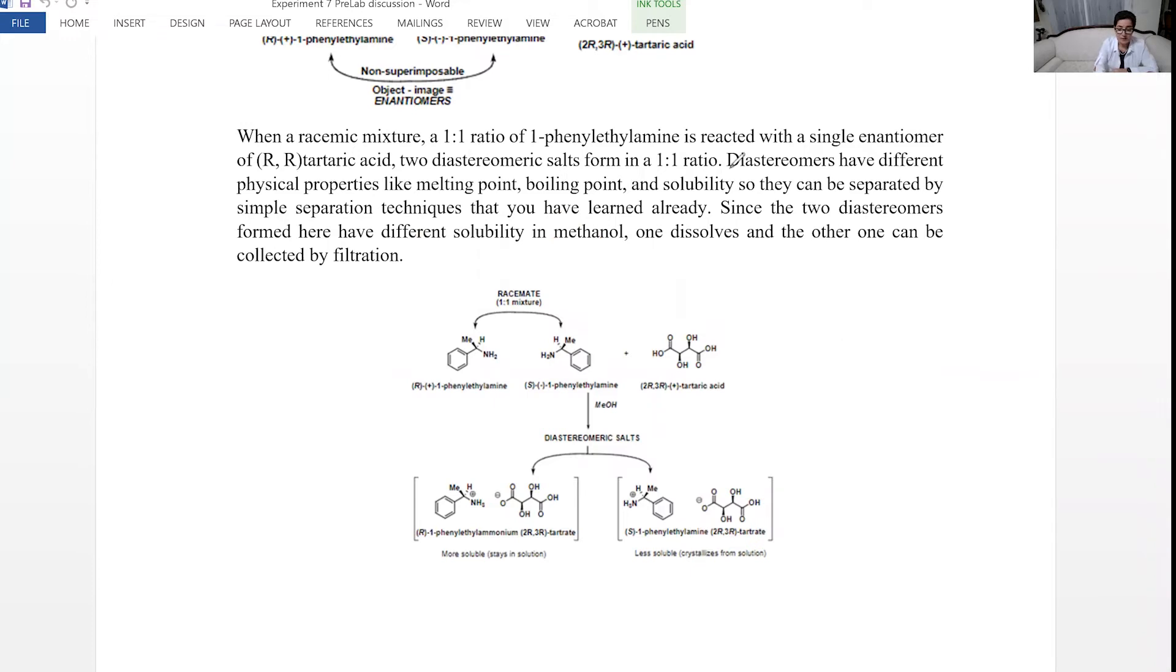Diastereomers have different physical properties. They have different boiling point, different solubility, different melting point. And these diastereomers actually have different solubility in methanol. When we make this solution, we do this reaction in methanol, but we don't use a lot of methanol. The solution is saturated.